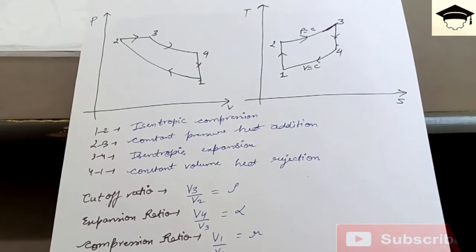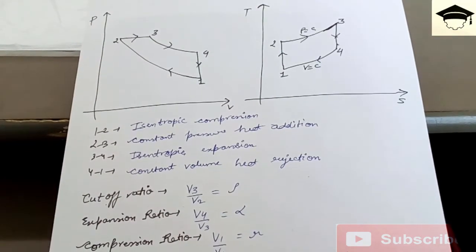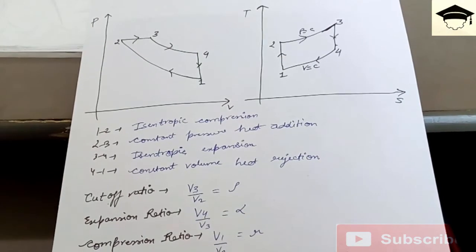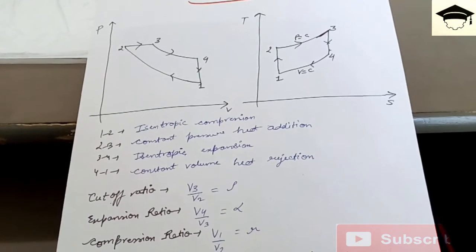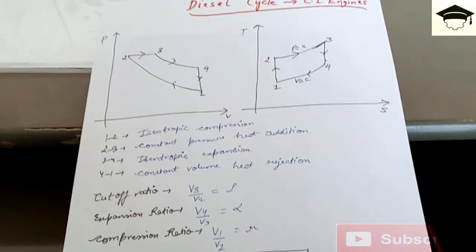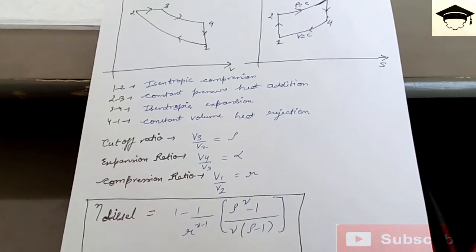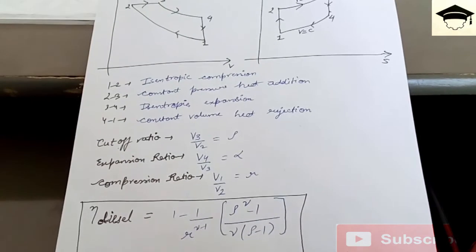The efficiency of the diesel cycle is given by: η = 1 - [1/(r^(γ-1))] × [(ρ^γ - 1)/(γ(ρ-1))]